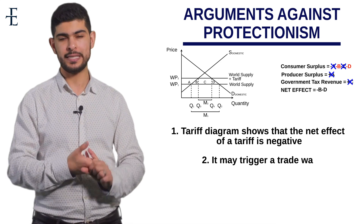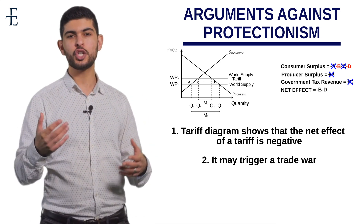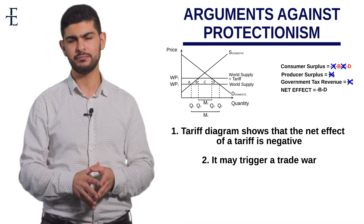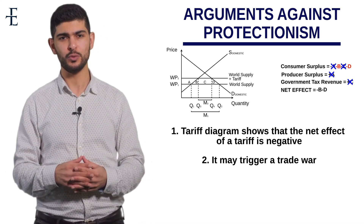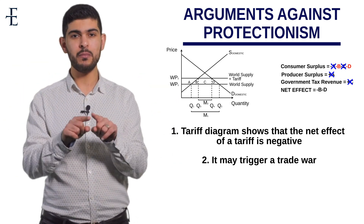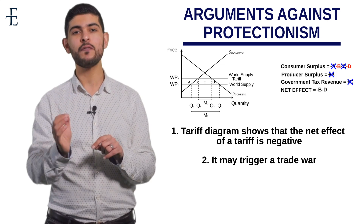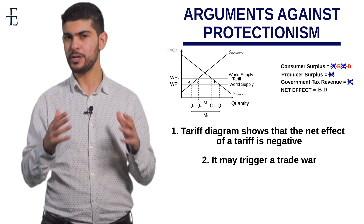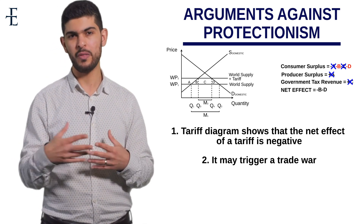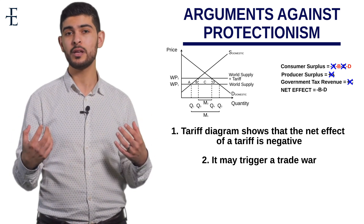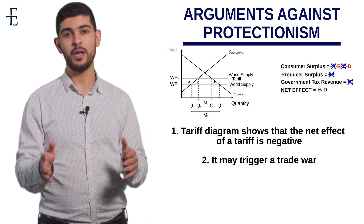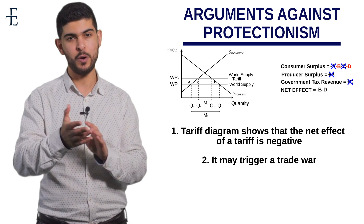Number two argument against protectionism: imposing a tariff could trigger a trade war. We said a tariff can reduce a trade deficit, but what if the other country retaliates and does exactly the same to you? The level of exports leaving your economy will go down. In particular, if the demand for your exports is elastic but the demand for your imports is inelastic, then your current account won't get better — it will get worse. Retaliation can do the exact opposite of what you're trying to achieve.